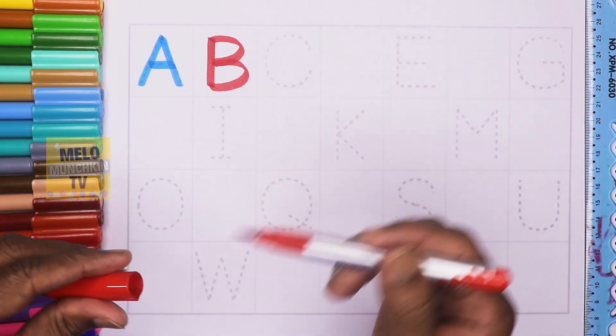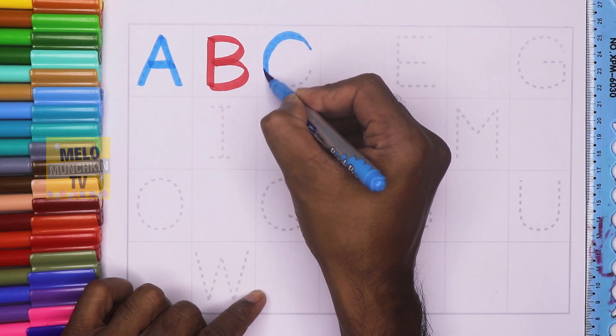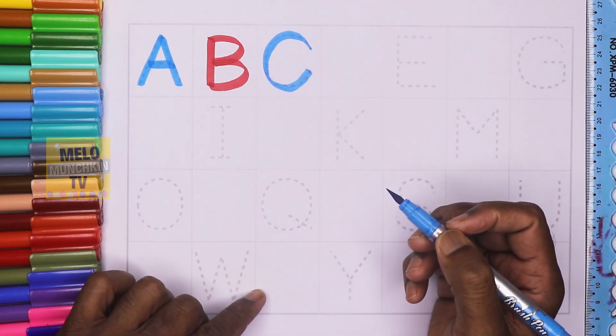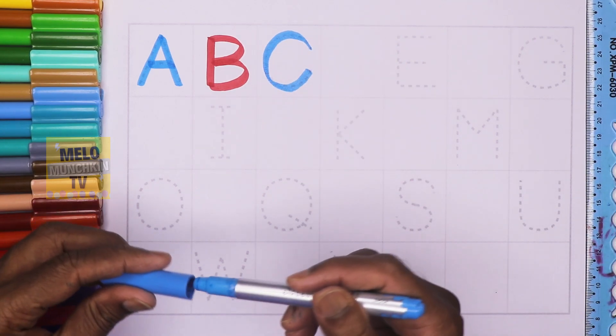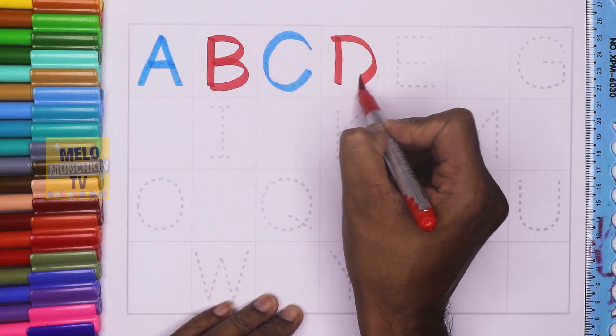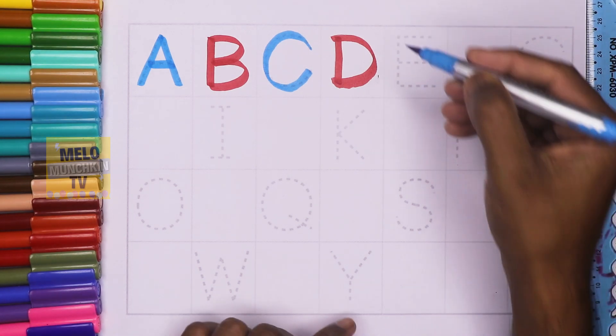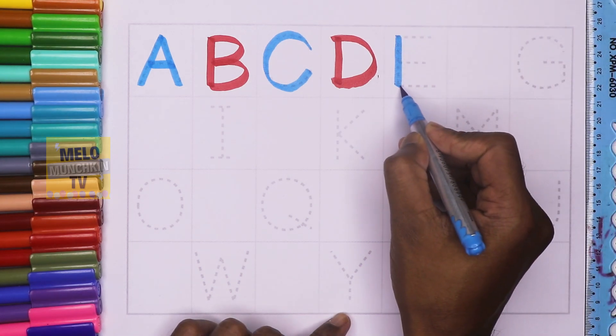This is red color. C for Cat. D for Donkey. E for Egg.